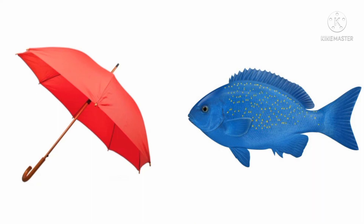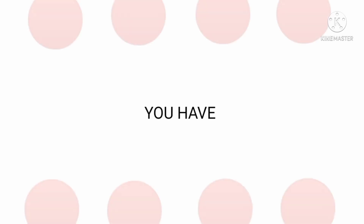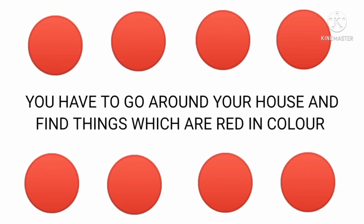Now here is a picture of a fish and an umbrella. Which one is red? Yes, this umbrella is red in color.